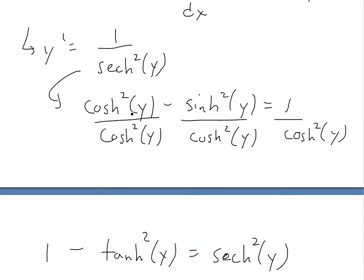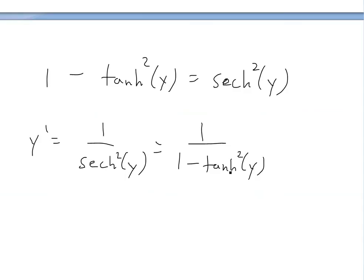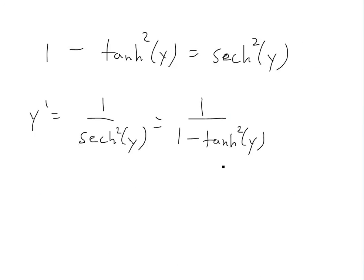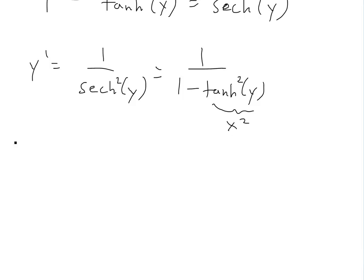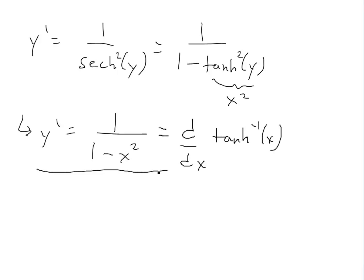So we now have a formula for hyperbolic secant squared of y. Plugging this in, y prime equals 1 divided by hyperbolic secant squared of y, which equals 1 over 1 minus hyperbolic tan squared of y. Since x equals hyperbolic tan of y, tan squared of y equals x squared, giving us y prime equals 1 over 1 minus x squared — and that is our derivative of inverse hyperbolic tan of x.